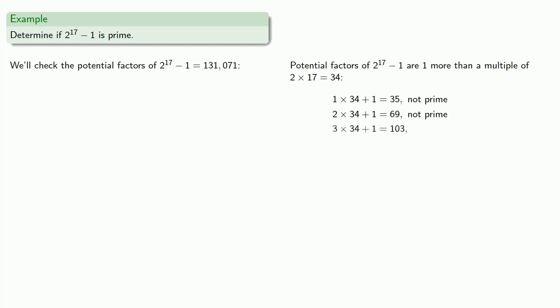3 times 34 plus 1 is 103, which is prime, and so we should check to see if it's a factor. 4 times 34 plus 1 is 137, which is prime, and again we'll have to check to see if it's a factor. But it isn't.